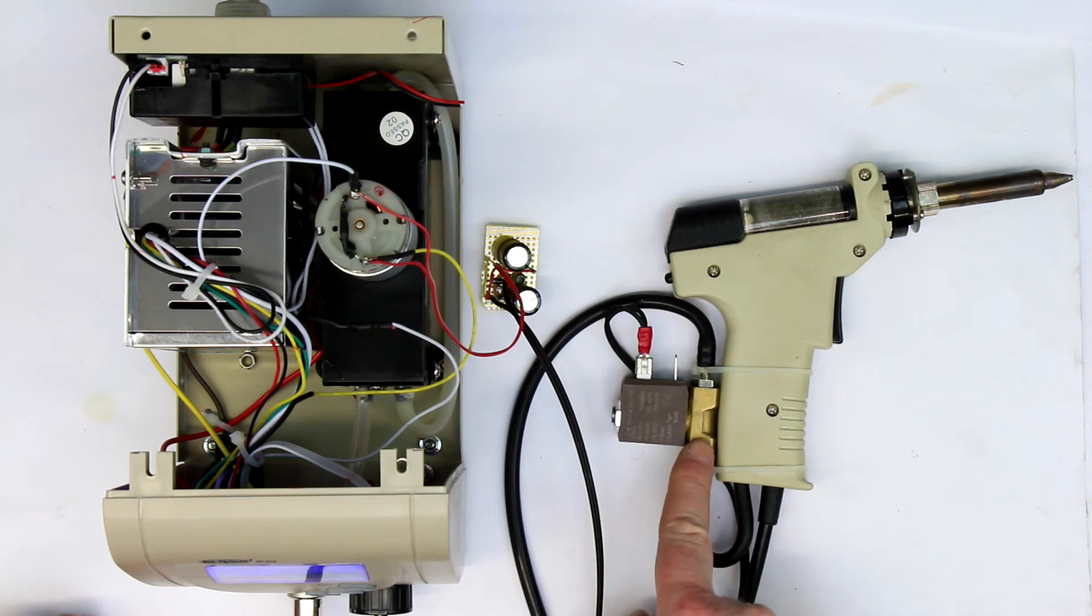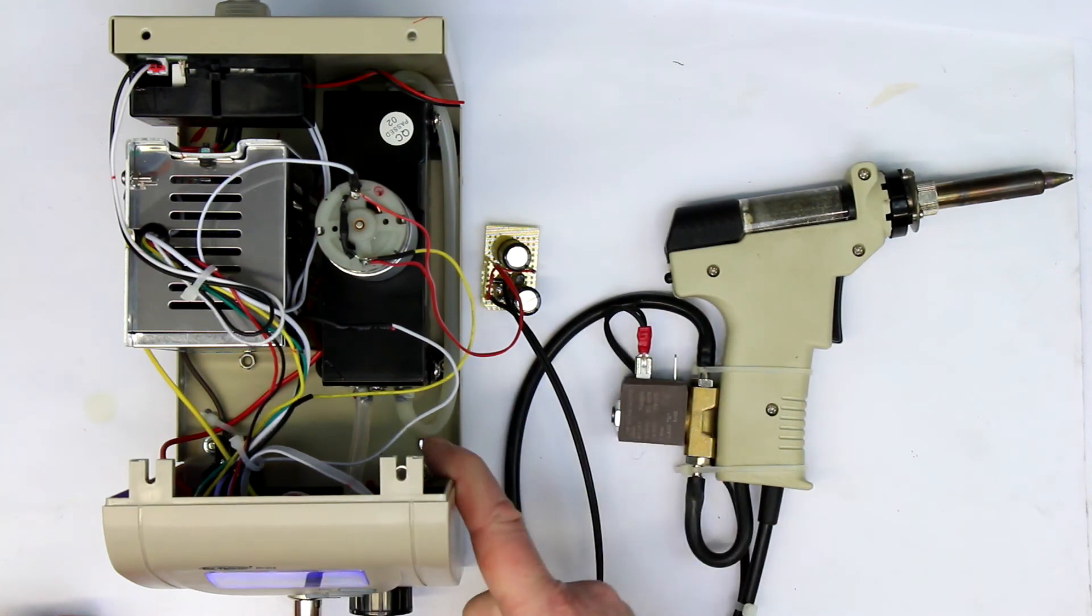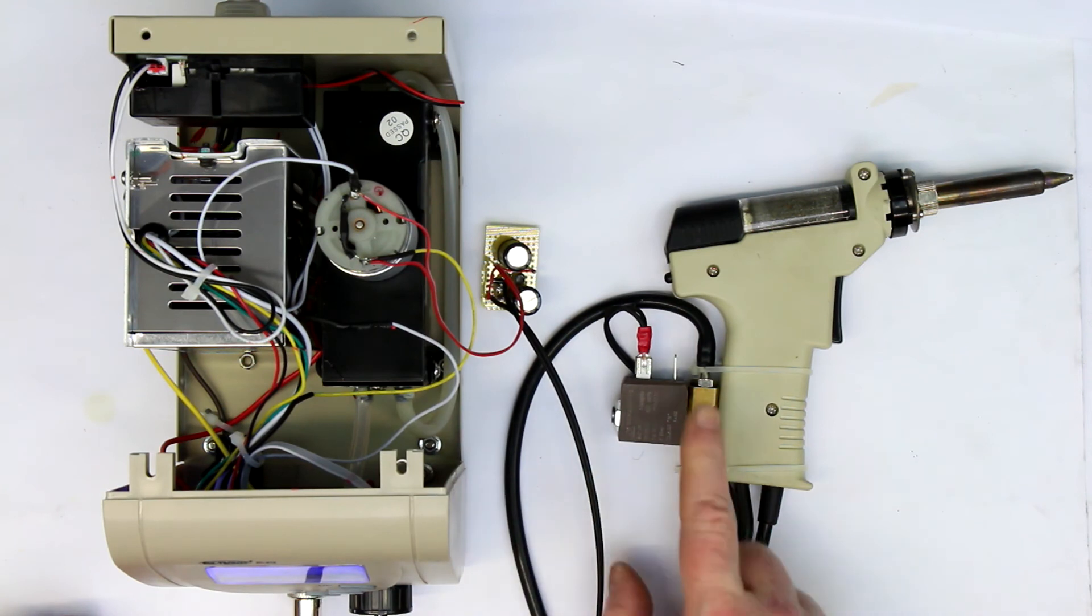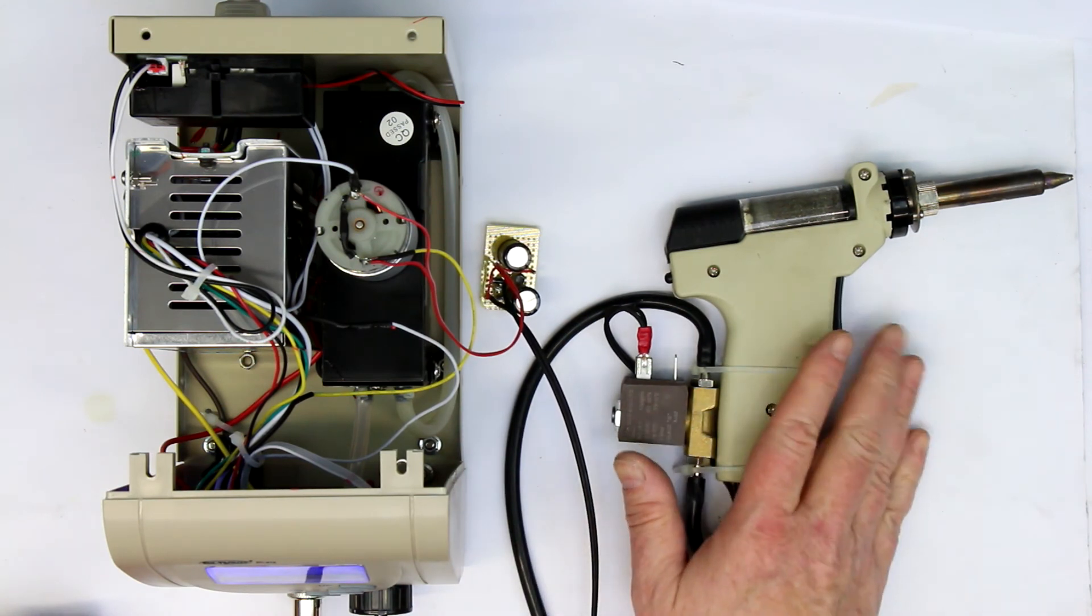So that's all. You could, of course, if you want to, put the vacuum valve here inside the station, but I think it's a little bit better to have it directly at the desolder gun.